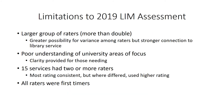Some limitations to our assessment: because we used a larger group of raters — more than double the initial one — there was a greater possibility for variance among raters. They could differ in their ratings, though each rater had a stronger connection to each library service. There was also a poor understanding for some raters of what the university areas of focus were, so these need to be better defined. There were 15 services with two or more raters; where ratings differed, we used the higher rating. All raters were first-time participants, making it difficult to fully understand the process.